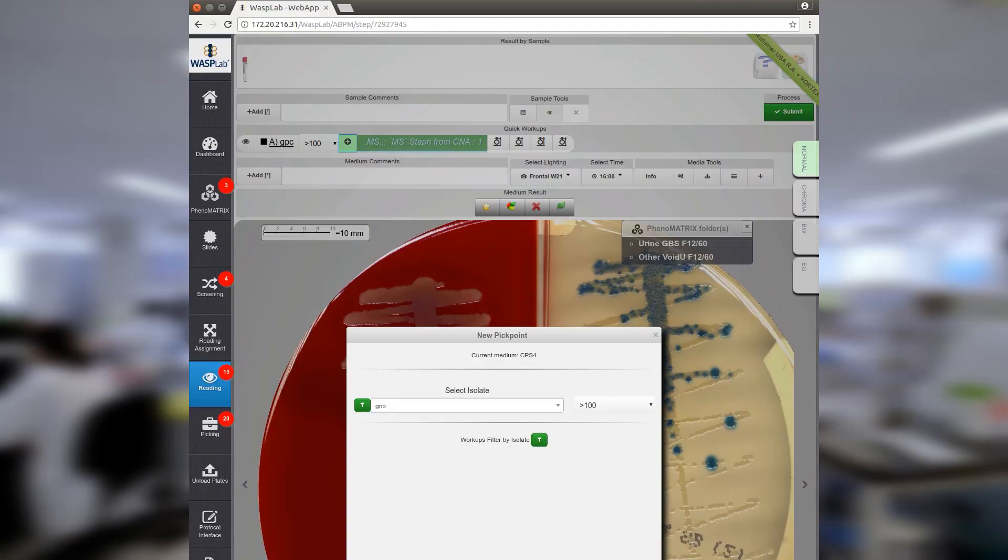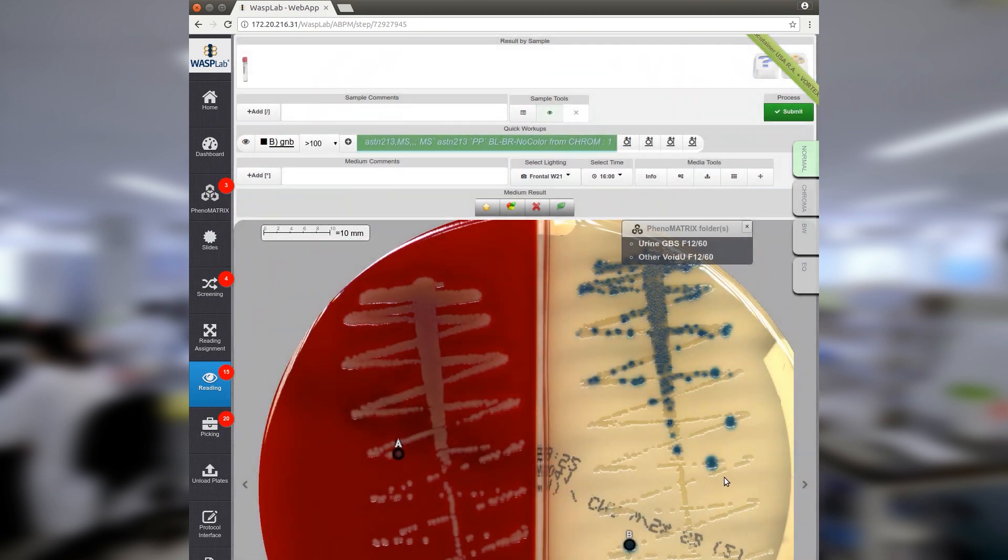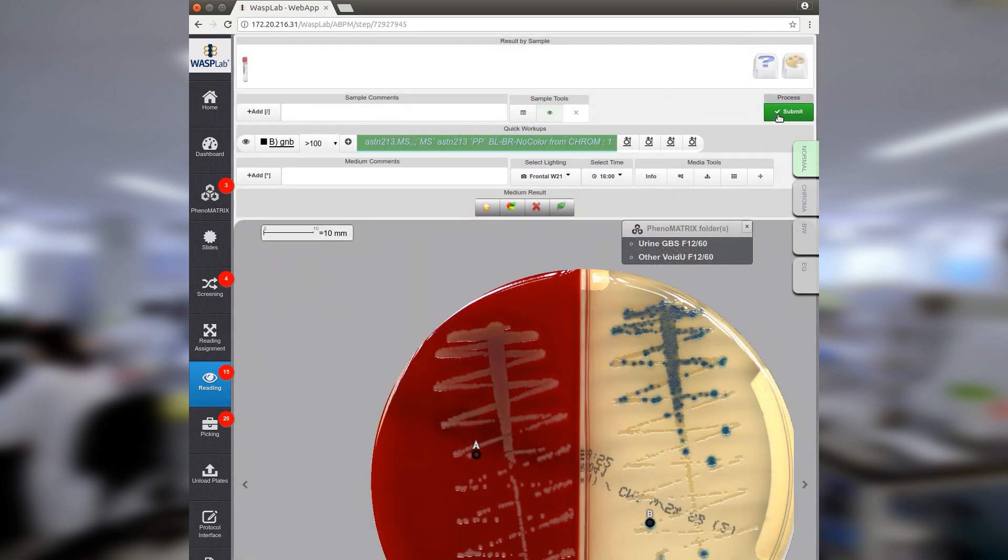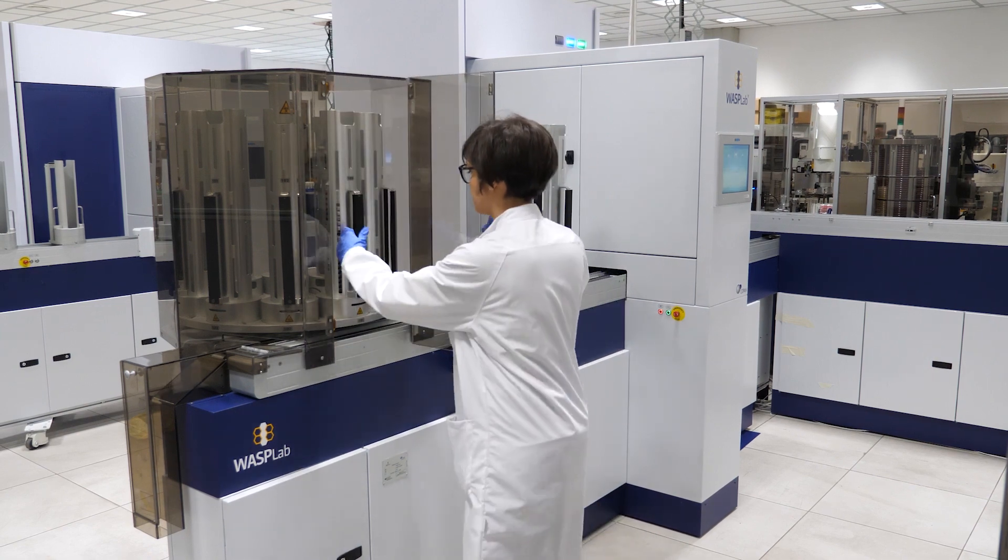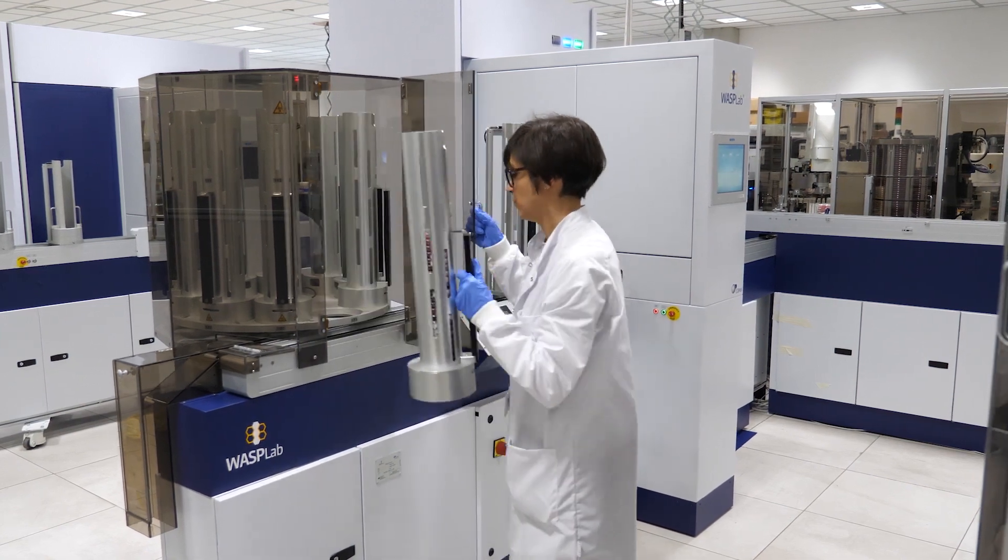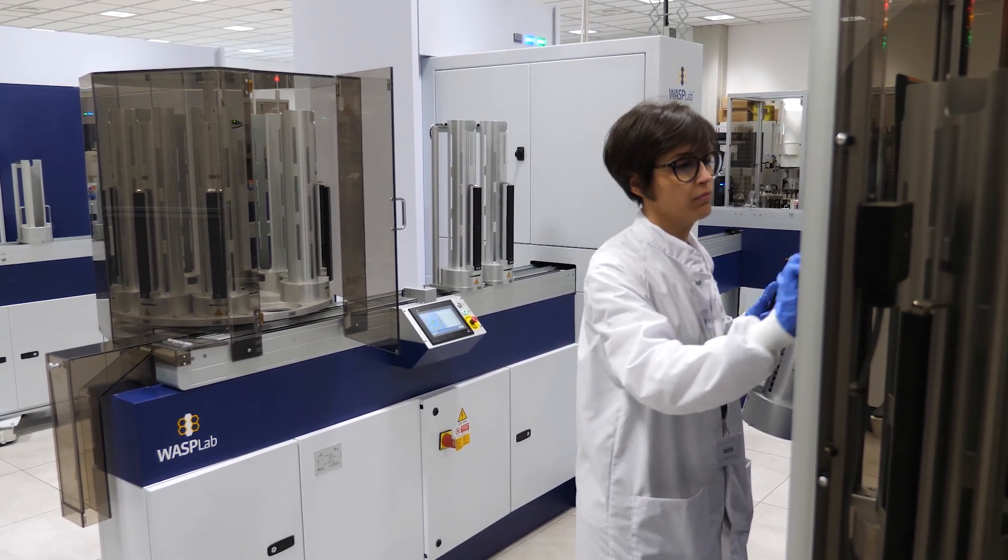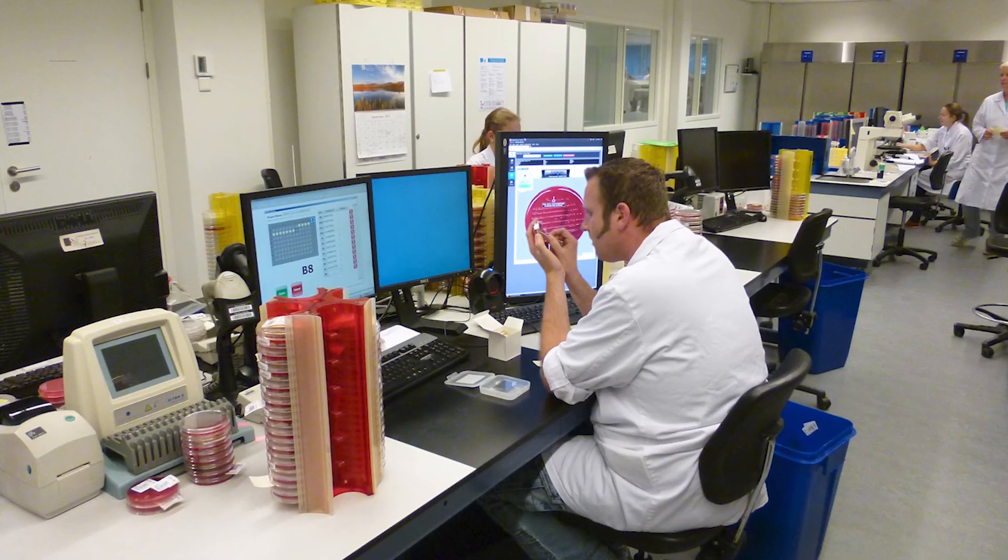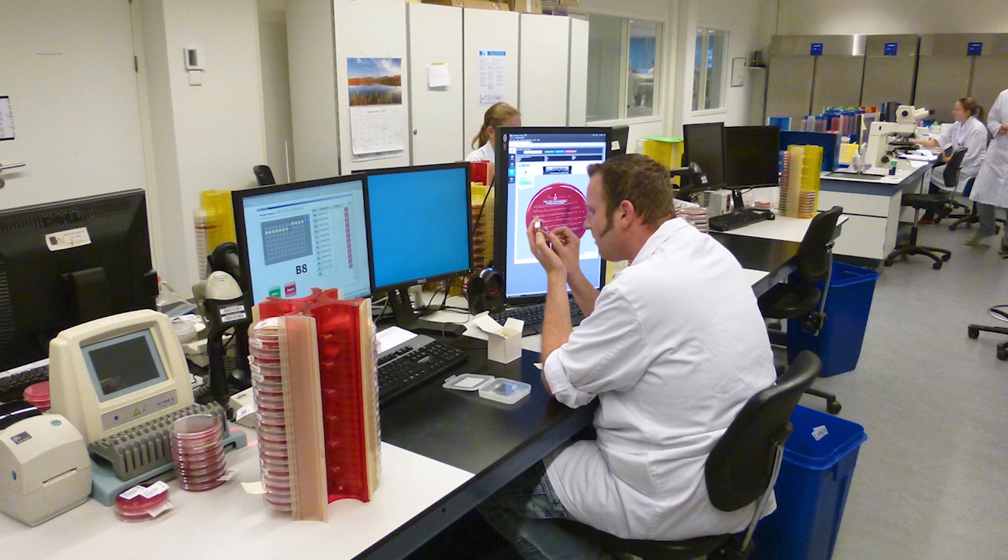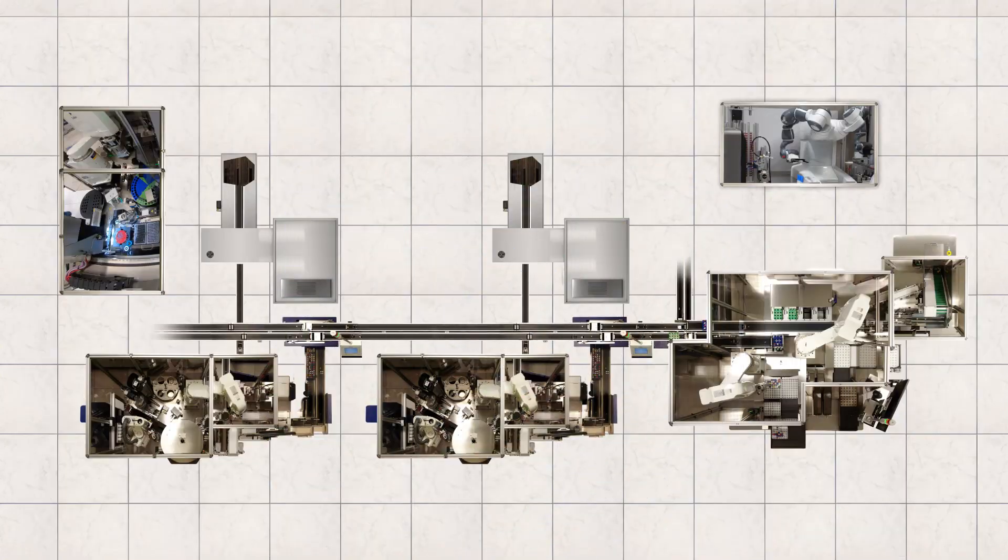At the reading station, technologists view all plates requiring further analysis and choose colonies for identification and susceptibility testing. Plates requiring workup are sent to removable canisters. Images are presented with tagged colonies and instructions for workup. The canister system gives labs flexibility to grow and change, adding more stations without having to add more track.